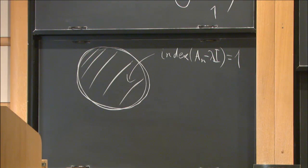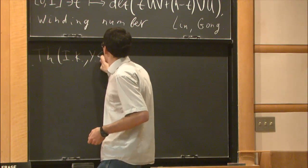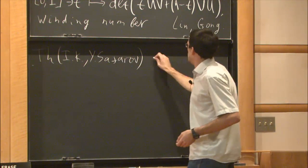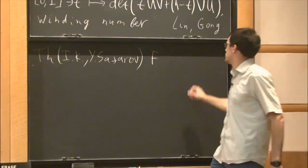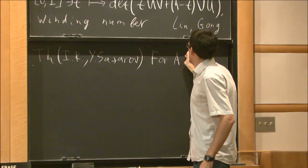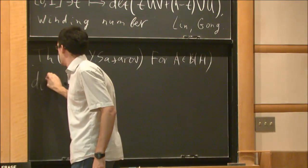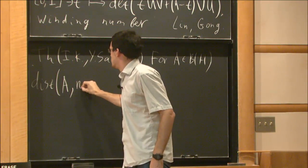Theorem: For A belonging to B(H), distance from A to normal operators is bounded by the sum of two things: the norm of the self-commutator in the optimal power one half, and if the dimension is finite then that's it, the second term will be zero.